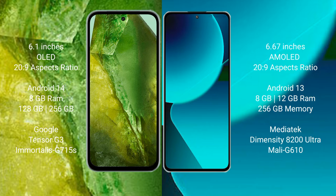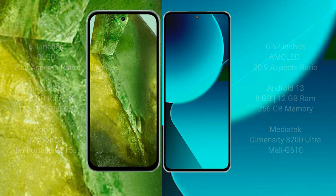Google Pixel 8a comes with 8GB RAM and 128GB or 256GB internal storage, with the Google Tensor G3 processor and Immortalis GPU. Xiaomi 13T comes with 8GB or 12GB RAM and 256GB internal storage, with the MediaTek Dimensity 8200 Ultra processor and Mali-G610 GPU.